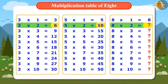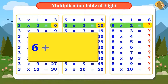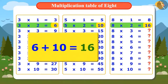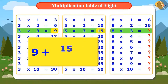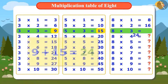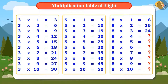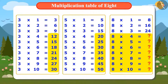The second number of the table of 3 is 6, and the second number of the table of 5 is 10. When we add 6 and 10, we get 16 — that means 2 times 8 is 16. To find 3 times 8, we add 9 and 15, giving us 24. In the same way, by adding all the numbers of the 3 and 5 multiplication tables one by one, we can find the entire multiplication table of 8.